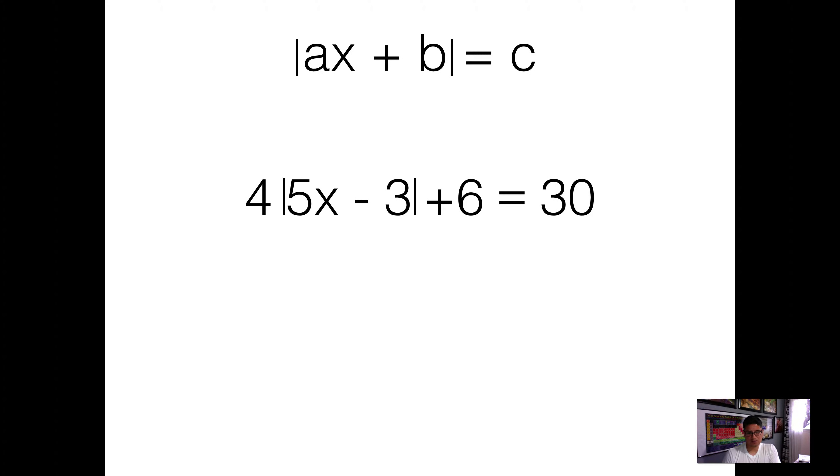I want to remove those first before I start solving my absolute value equation. That's what I want to isolate. So I'm going to subtract 6 from both sides. This will eliminate my 6, give me 24. Clean up the equation a little bit.